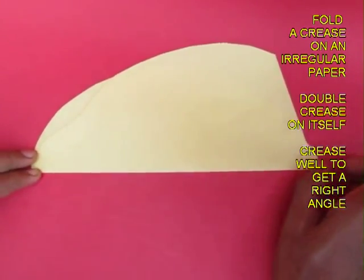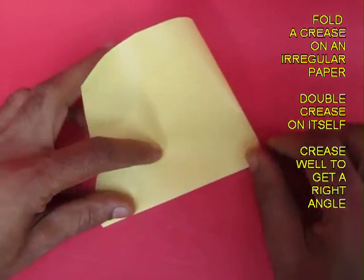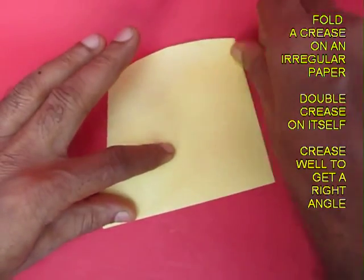Now every crease generates 180 degrees. Now double this up with the line and the crease at right angles.